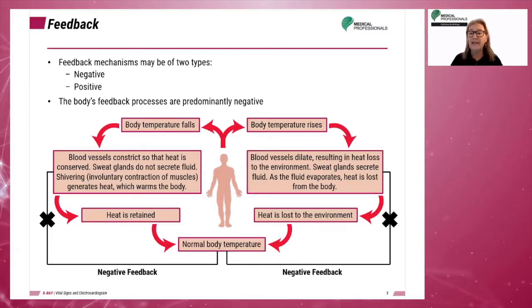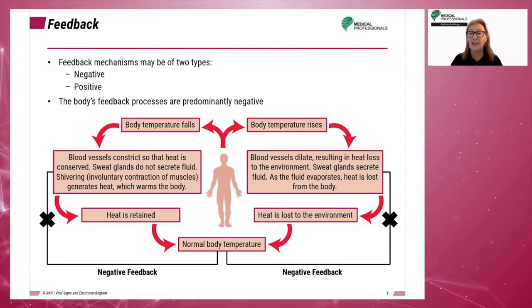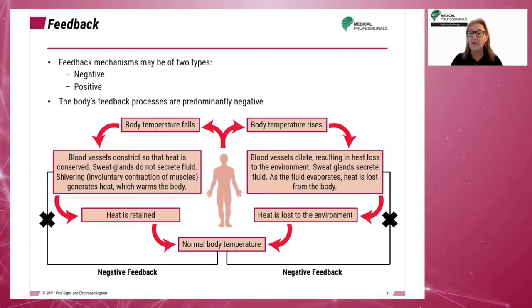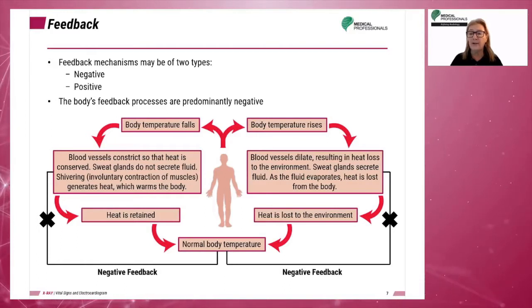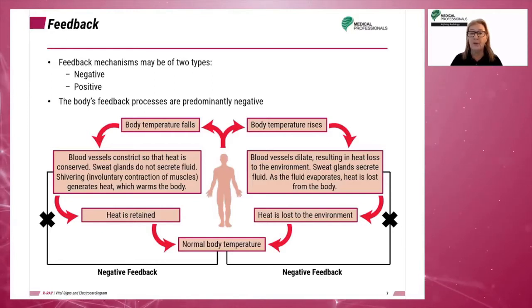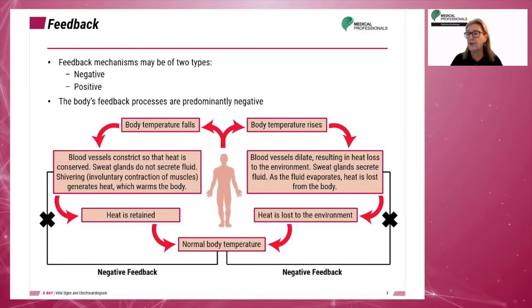If the kidney detects low levels of oxygen in the blood, they respond by releasing the hormone erythropoietin, which travels to the red bone marrow to stimulate the marrow to begin red blood cell production.